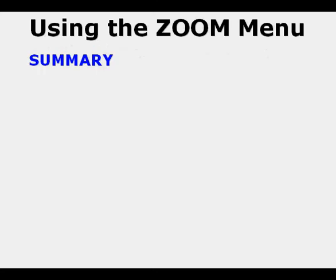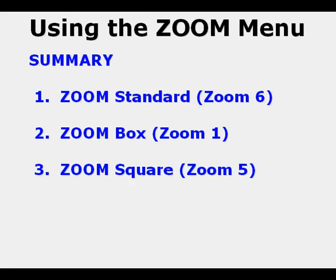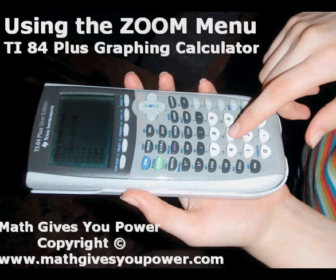Now we'll summarize. We looked at Zoom 6 — Zoom Standard. We looked at Zoom 1 — Zoom Box. We looked at Zoom 5 — Zoom Square. And we looked at Zoom 9 — Zoom Stat. There are follow-up video lessons regarding operations accessed by the function keys at the top of the keypad: the Stat Plot menu, the Window function, the Table Set operation, and the Calc menu. You may access any of these lessons by clicking the associated button in the bottom half of this image. This has been Using the Zoom Menu — TI-84 Plus Graphing Calculator. Thanks for viewing.